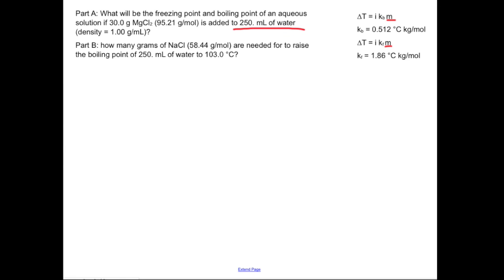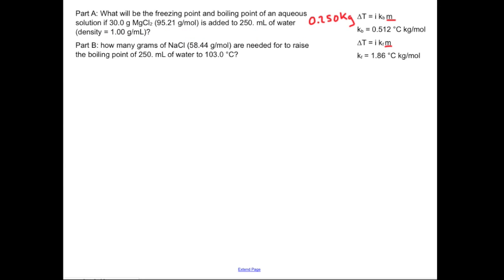Here's my thing that's just dissolving. Remember, a gram per milliliter is the same thing as a kilogram per liter. And 250 milliliters is the same thing as 0.250 liters. So we are going to be dealing with 0.250 kilograms of water, and that is our solvent. Let's keep that off to the side — that's going to save us some time when we start plugging in numbers.